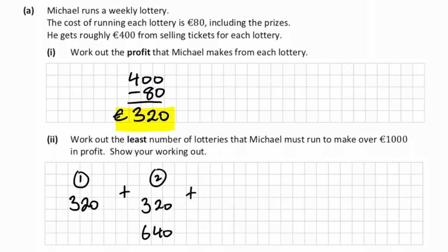If he ran another one, he'd get another 320 for his third one, and the total here now would be 960. Now he still hasn't reached a thousand, so he needs one more. So he runs a fourth one to get another 320, and that would bring his total to 1,280. So it takes four lotteries.